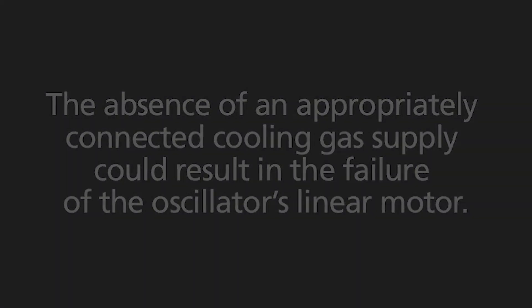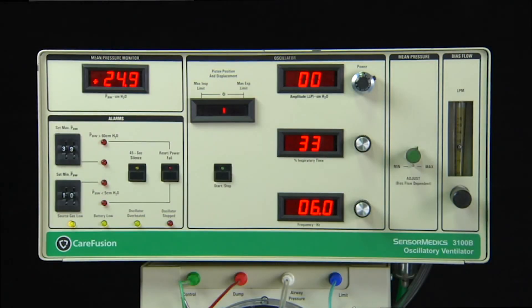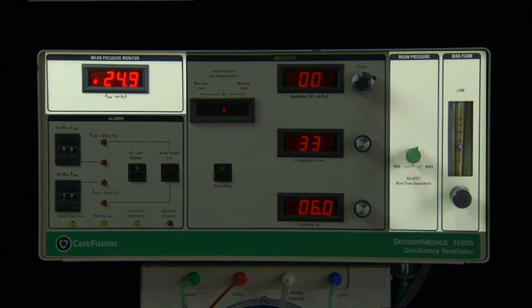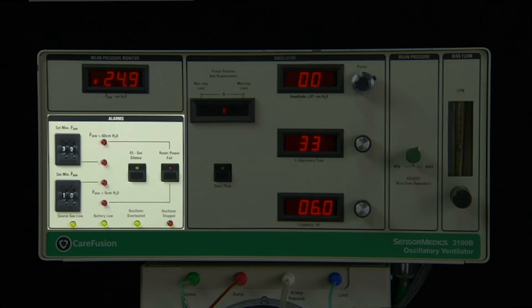The front panel can be divided into three sections: controls and displays for mean airway pressure, high-frequency oscillation, and alarm package.